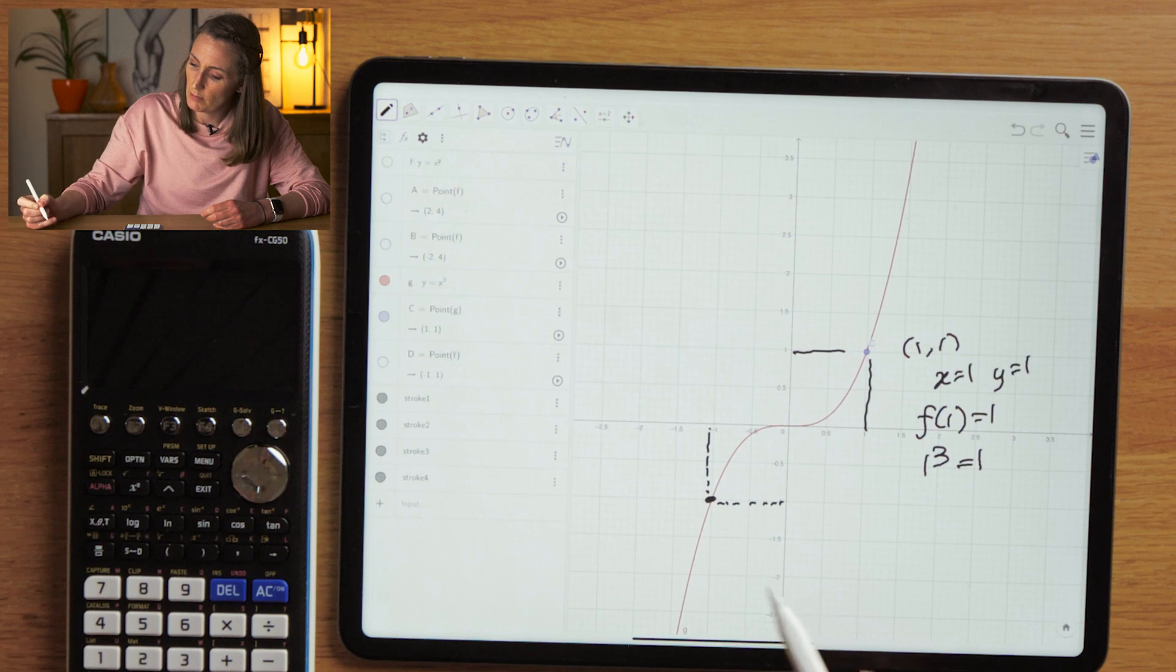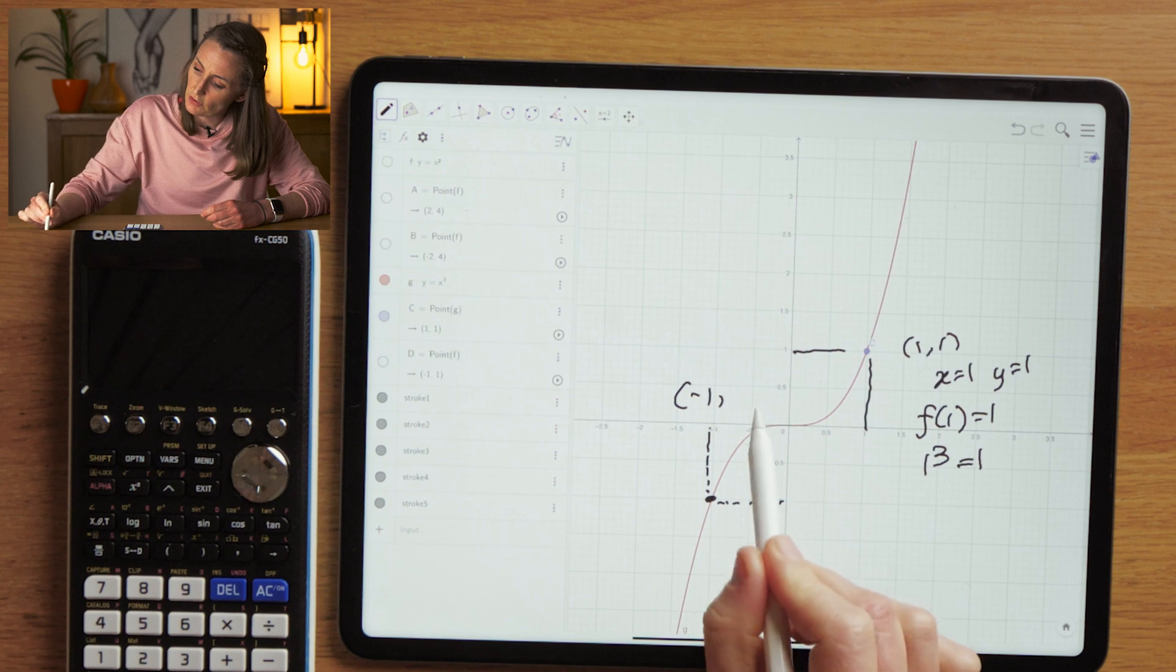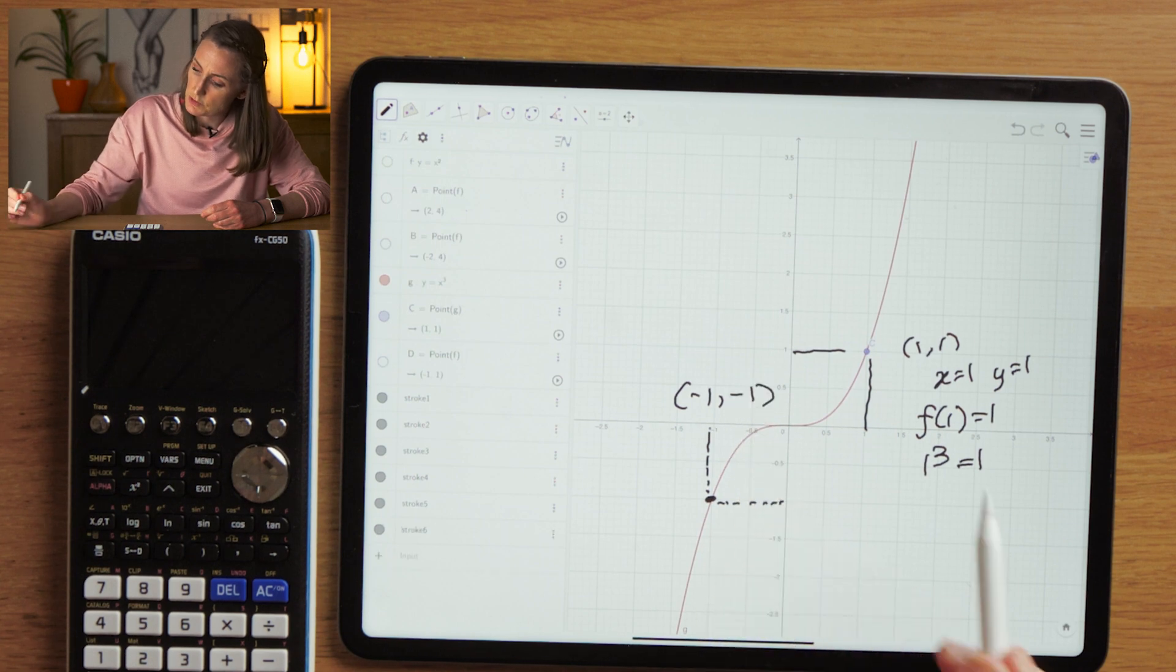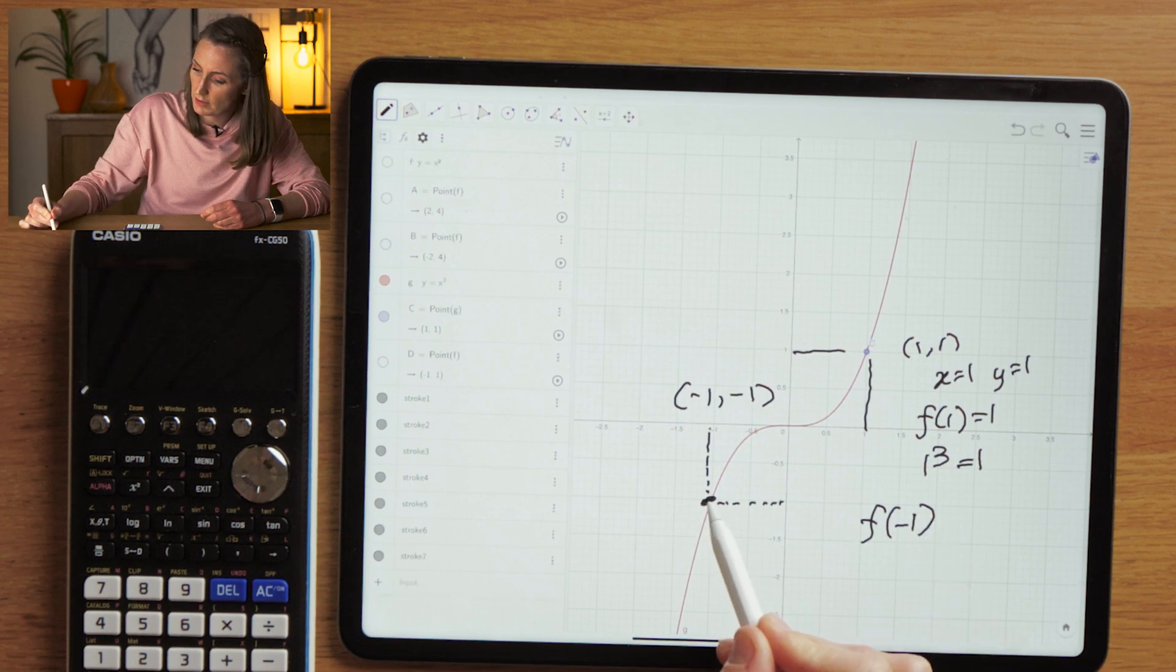Now if I look in this case at minus 1, okay, so here I'm looking at minus 1, and I can see that it has a y value of minus 1. So in this case we have f of minus 1, okay, which is this point here, is equal to minus f of 1.